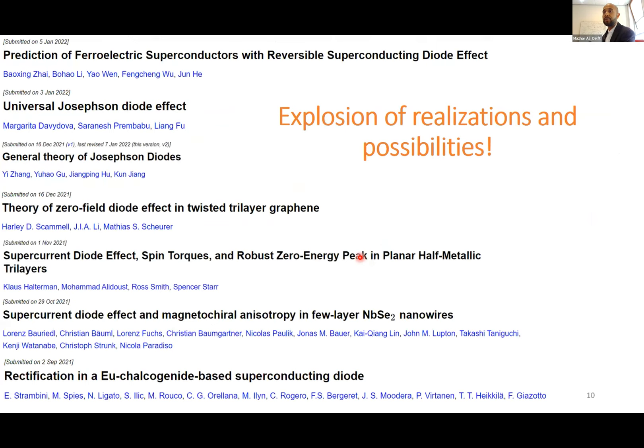There has been an explosion of realizations of the superconducting diode effect. It's now been seen in twisted bilayer and trilayer graphene, in nanowires, in another quantum material — iron germanium something — and in European-based systems. The gates are sort of open and material scientists are working with physicists, with a lot of possibilities on the horizon.